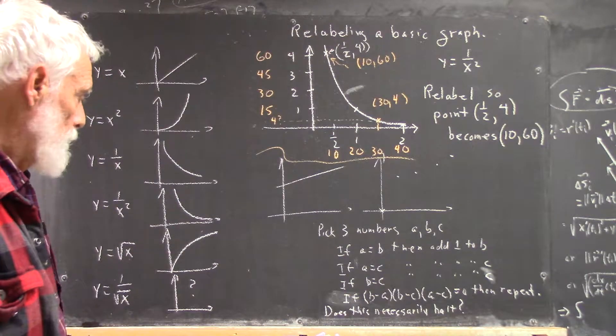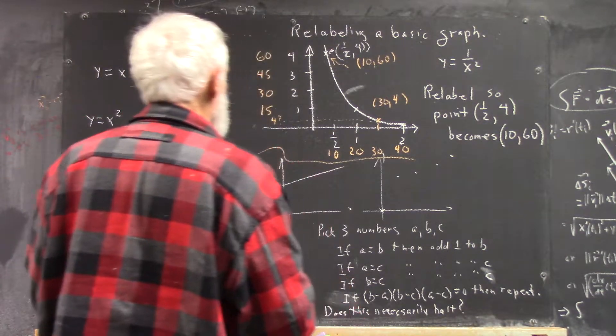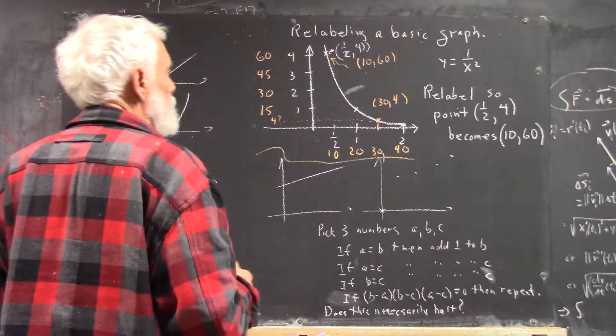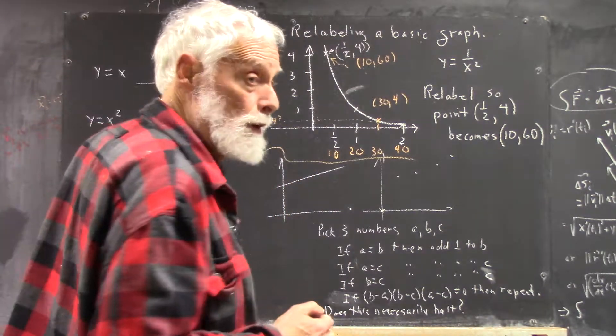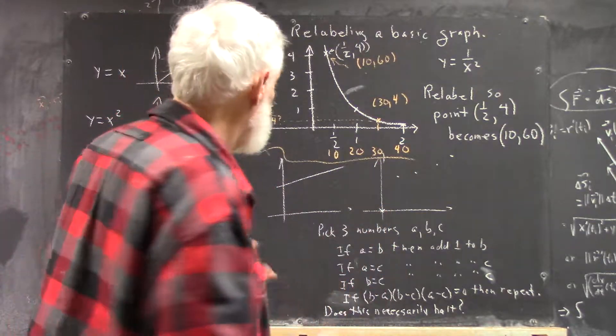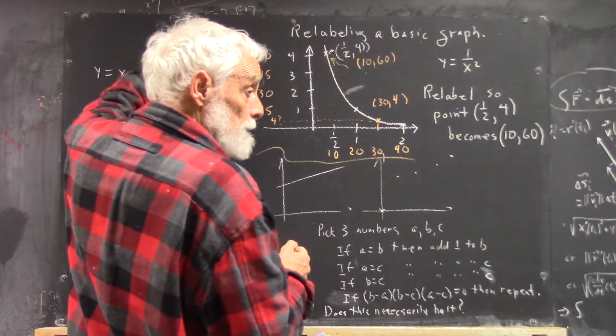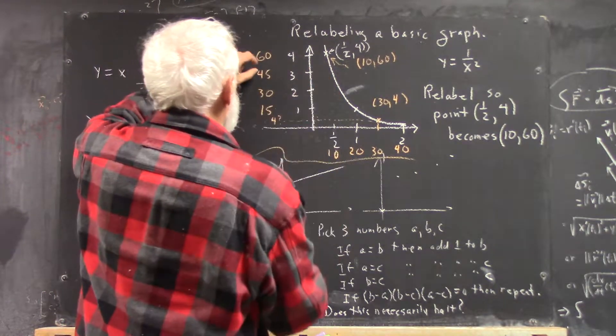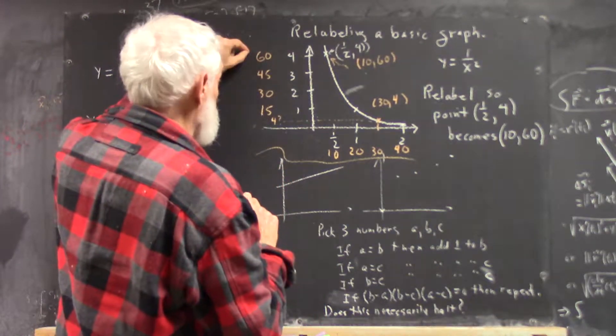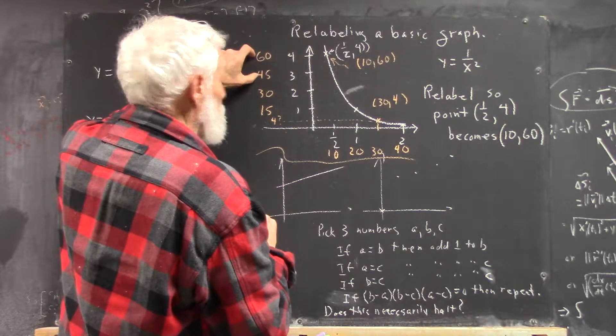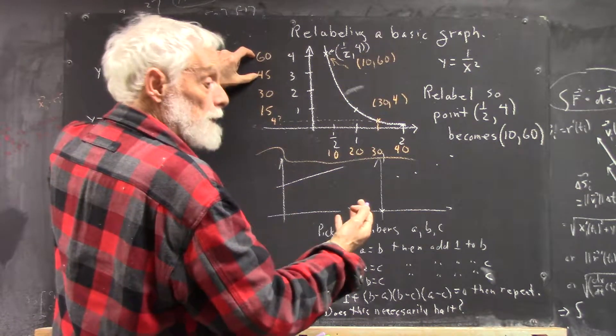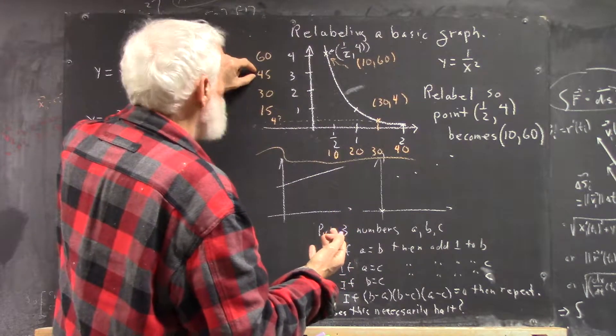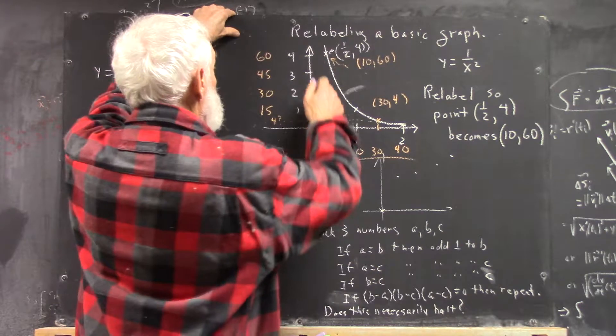Another thing I can do is say, if y equals, let's say, 50, what's the value of x? Well, where is 50 on the new scale? 50 is a third of the way between 45 and 60, if you think about it, because between here and here, you have 15 units. 50 is 5 more than 45. That's a third of the way from 45 to 60.